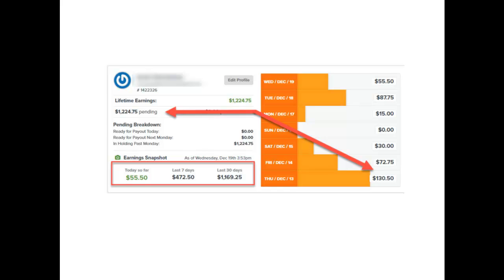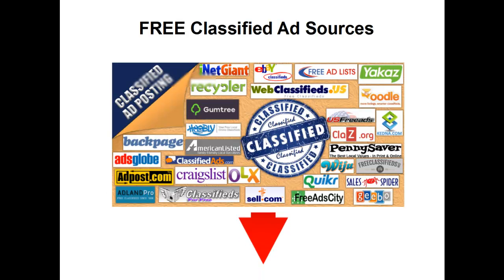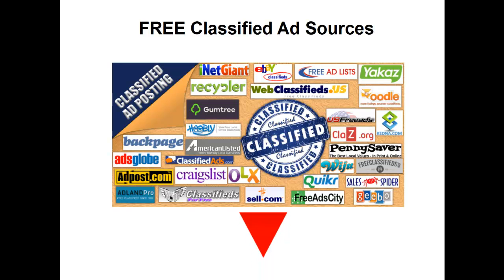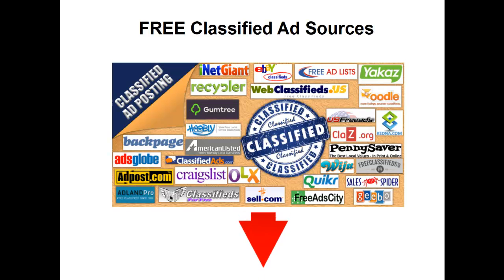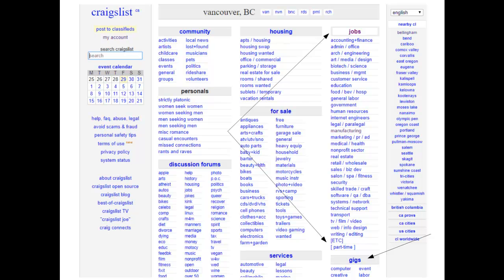So can you make money with classified ads? Absolutely. This affiliate is proof — he's now making four to five thousand dollars a month. Can you make more than $100 a day? Yes, but you've got to put in the effort. The classified ad sources are listed below, including some of the top ones I've been using, and you can always find more by searching Google.